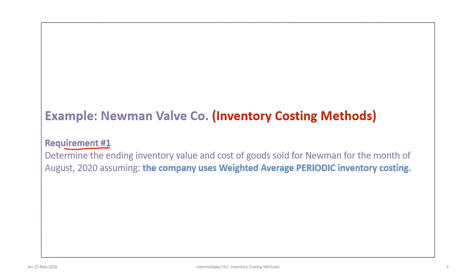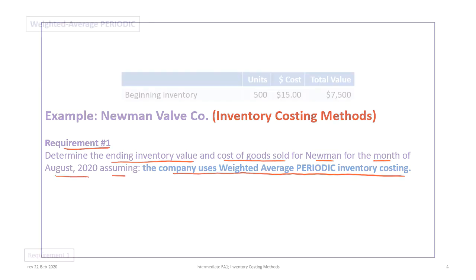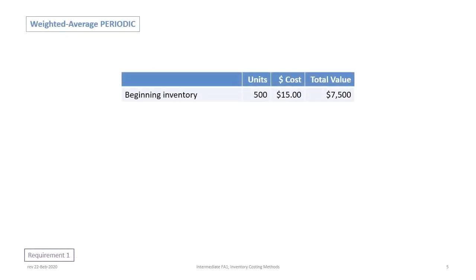So let's begin. Our requirement is to determine the ending inventory value and cost of goods sold for Newman for the month of August under the weighted average periodic inventory costing approach. We begin by constructing the cost of goods available for sale, starting with beginning inventory: 500 units at a cost of $15, giving a total value of $7,500.